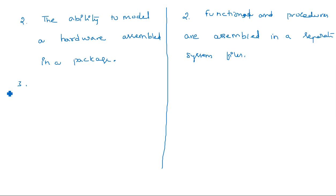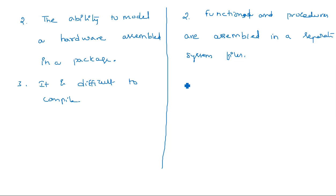The third difference: VHDL is difficult to compile because it has two parts — an entity and one or more architectures for a single entity. Whereas in Verilog, there is only one particular module; it does not have an entity-architecture separation. That is why Verilog is easy to compile.